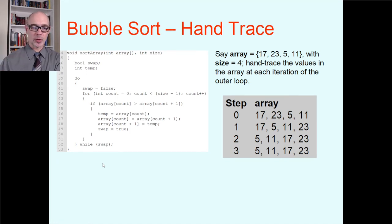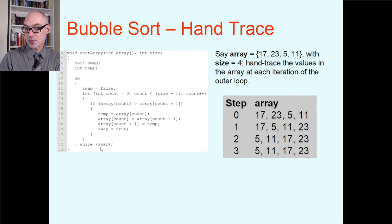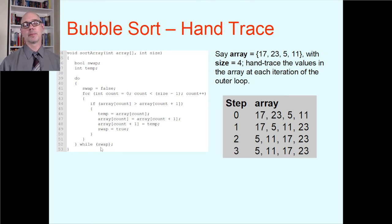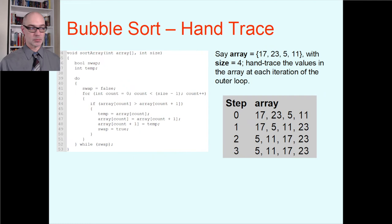But what's different here is we didn't make any swaps. So the swap variable will be false at this point. When you hit the while condition, while false means the loop ends — you're not going back to the do. At this point the loop finishes, the function exits, and the array actually is in the right order.